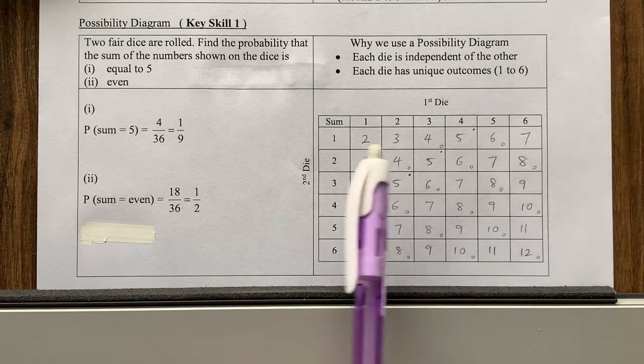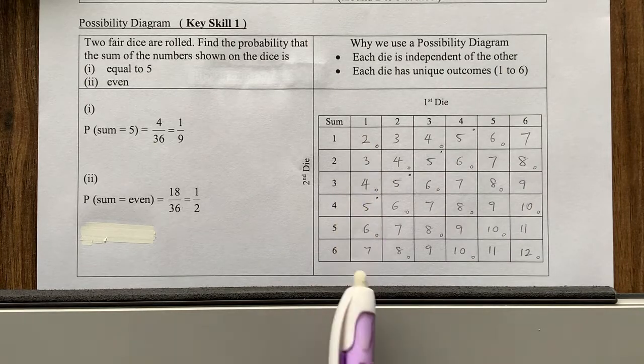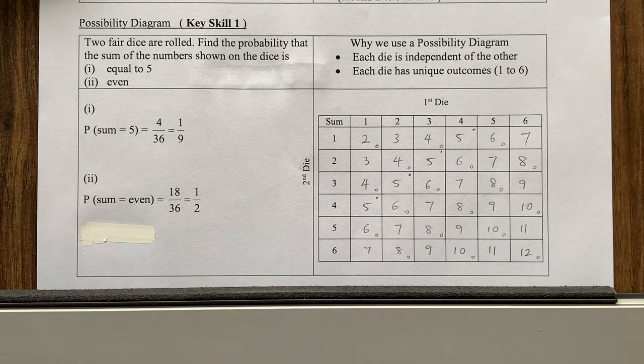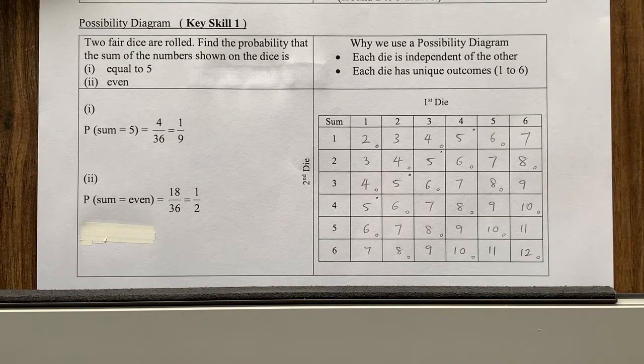So basically, everything here, this 36 numbers over here, represents the total possible outcomes that is in this context. Okay, so with this, it becomes very easy to answer the question.